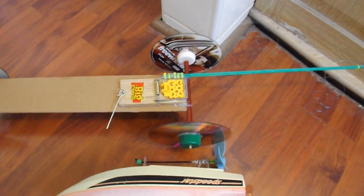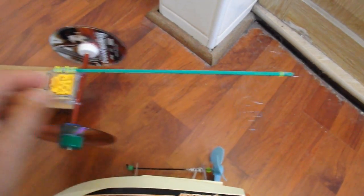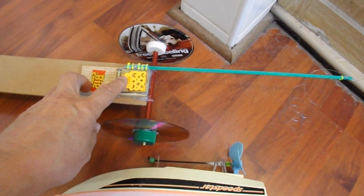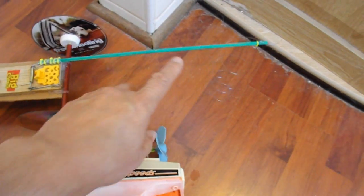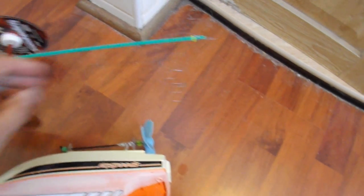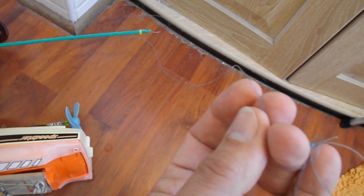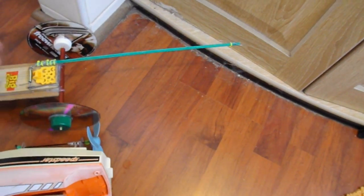On most mousetrap powered cars, guys tend to put a long lever onto the mousetrap to increase the distance of travel, so that you can use a long piece of string to drive the car a long way.